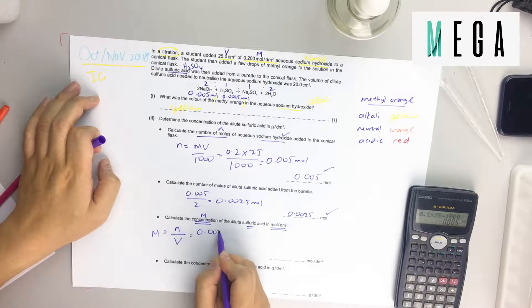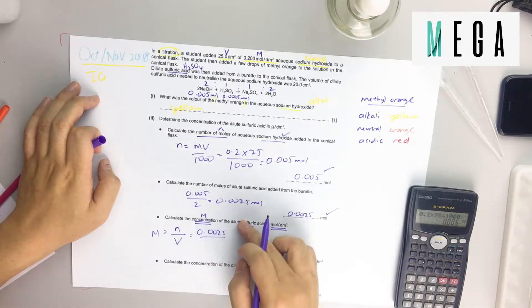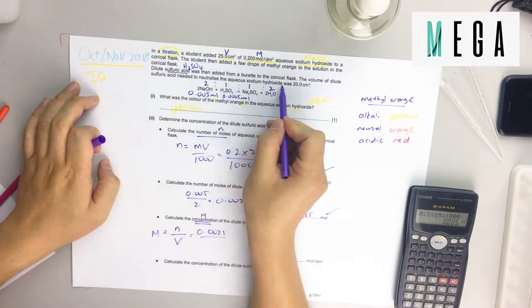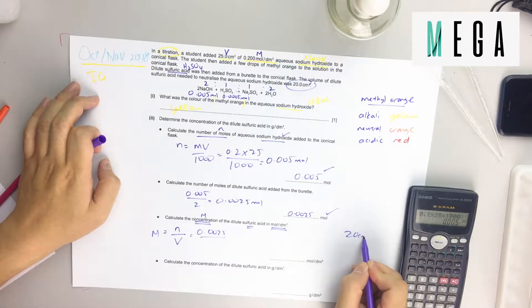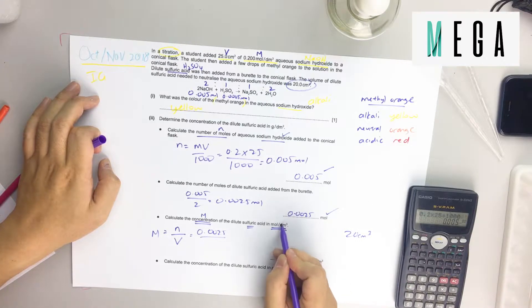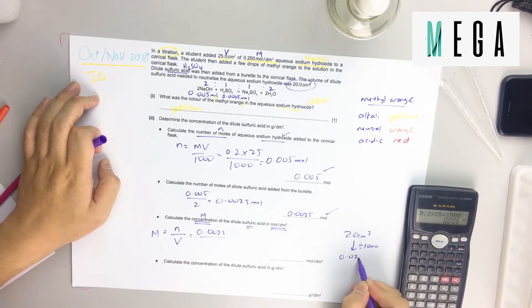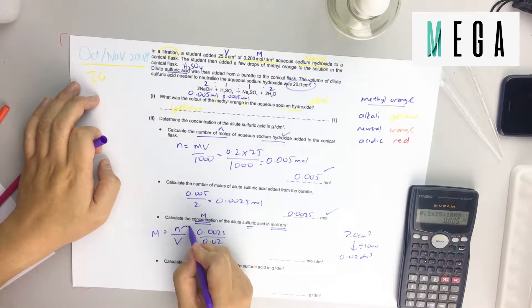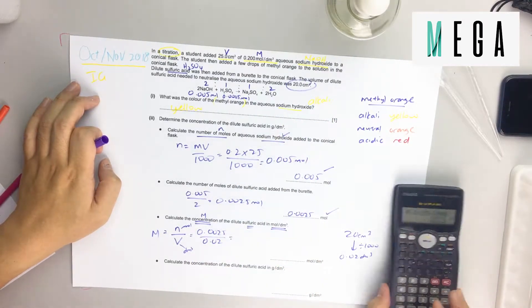Since we have the information already for sulfuric acid, 0.0025 mole, go to the question. The volume of dilute sulfuric acid needed to neutralize sodium hydroxide was 20 cm³. Be careful, they want dm³, so change it: divide by 1000 to get 0.02 dm³. Make sure you convert it before you put in your calculator.